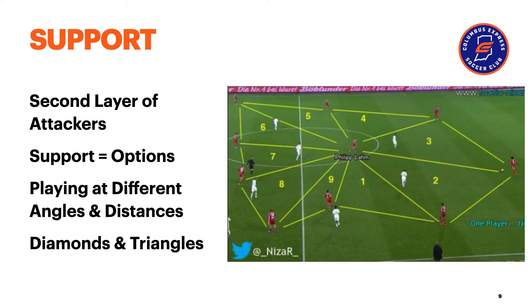Diamonds and triangles are the most effective forms of support. As you can see here, Bayern Munich from back in 2015 has support all around the field, with most of the play linking into Philipp Lahm in the middle. Notice all the diamonds and triangles created by the players in a very compact area. They have passing lines and space creation where they can advance into different areas.